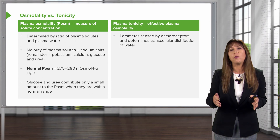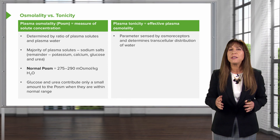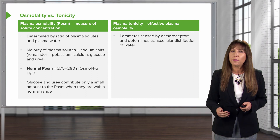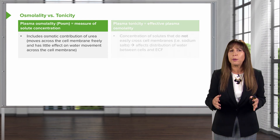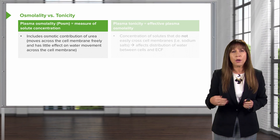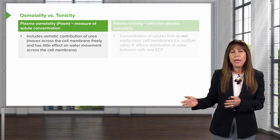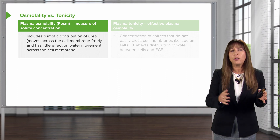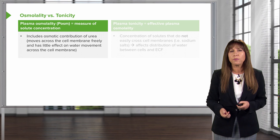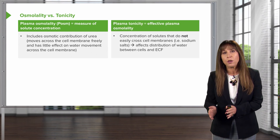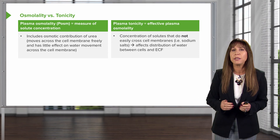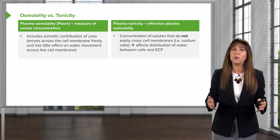Plasma tonicity is the effect of plasma osmolality — it's the parameter sensed by osmoreceptors, and it determines the transcellular distribution of water. Plasma osmolality includes the osmotic contribution of urea, which is an ineffective osmol, since it can move freely across cell membranes and has very little effect on water movement between cellular compartments. Plasma tonicity, on the other hand, reflects the concentration of solutes that do not easily cross the cell membrane, such as sodium salts, which affects the distribution of water between cells and the extracellular fluid compartment.